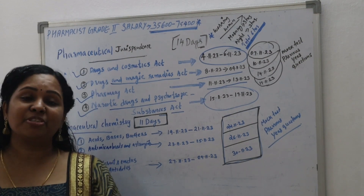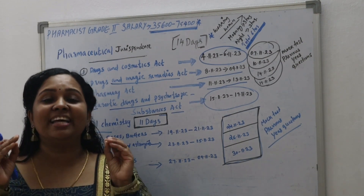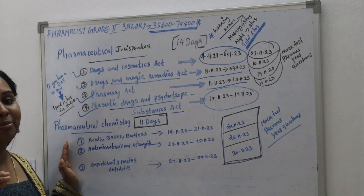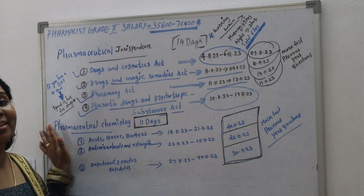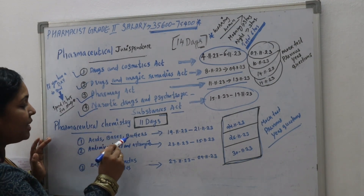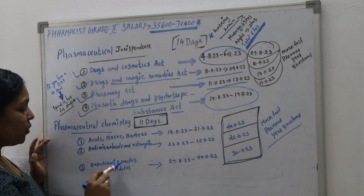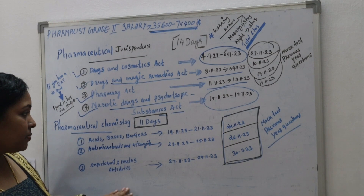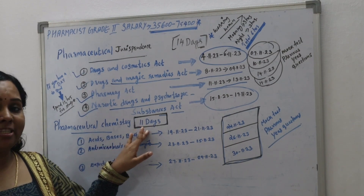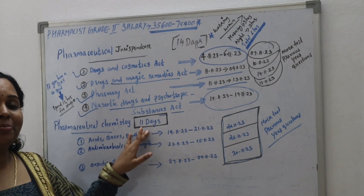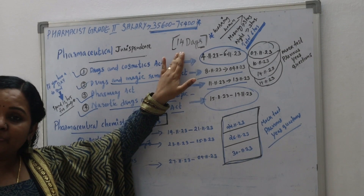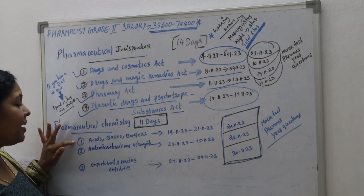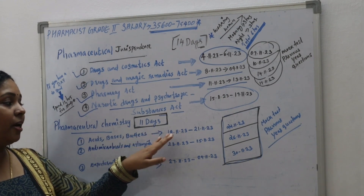Now we are going to talk about Pharmaceutical Chemistry 1. Pharmaceutical Chemistry 1 is a very simple subject. You will learn 3 topics. You will learn acid-base buffers, antimicrobials and astringents, expectorants and emetics, and antidotes. Pharmaceutical Chemistry 1 is very simple — it only takes about 11 days. We will start with acid-base buffers.